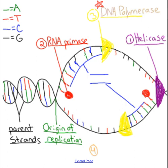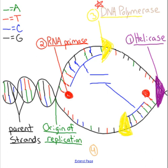The next step is RNA primase, shown here with the red dot on this side and a red dot over here. RNA primase puts down a primer to begin the process of replication. Then, probably one of the most important enzymes, is DNA polymerase. DNA polymerase moves down the DNA and adds new bases — adding green to red, so A to T, and adding blue to black, which is G to C.